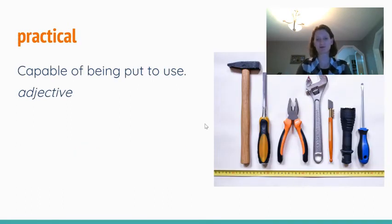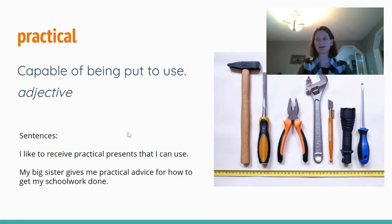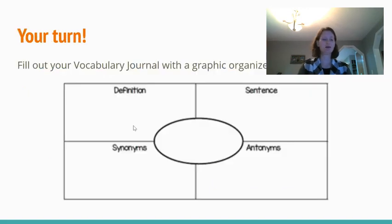Our final word is practical, and that means capable of being put to use or used for something. It's an adjective, so it's a describing word. I've put a picture of tools here because they are capable of being put to use — you can use them for something. When you think of something being practical, think of how it can be used. In a sentence: I like to receive practical presents that I can use, not just look at. Or: my big sister gives me practical advice for how to get my schoolwork done — advice that I can use, capable of being put to use.